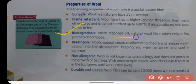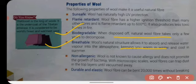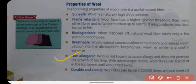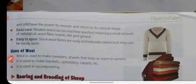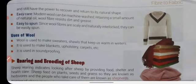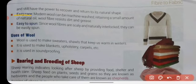Wool is biodegradable and can degrade and decompose naturally. It is also breathable, so it prevents suffocation and keeps you warm in winter and cool in summer. Wool is non-allergic to our skin, has double elasticity, is easy to care for by both machine and hand washing, and can repel dirt and grease. It is also easy to spin.